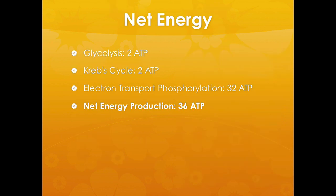This next slide is important because it tells you the net energy within each step. In glycolysis we get two ATPs. From the Krebs cycle we get two ATPs. From the electron transport chain we get 32 ATPs. So overall we get 36 net ATPs. Remember, in glycolysis we actually got four ATPs, but two were required for activation of the process, so they're not net. The net energy produced throughout these three processes is 36 ATPs.